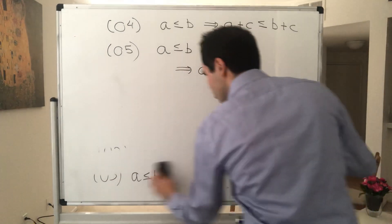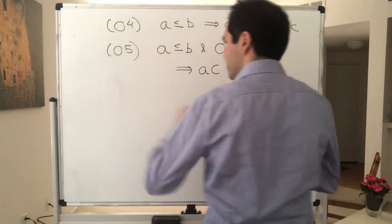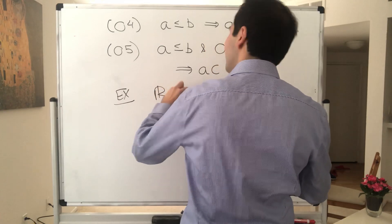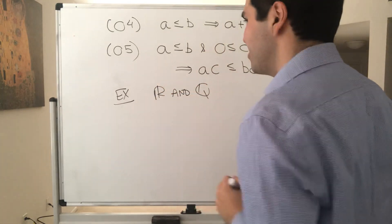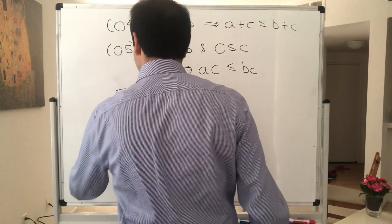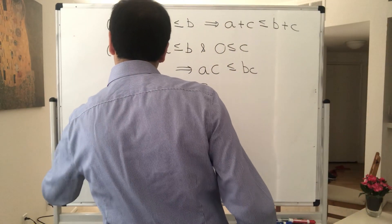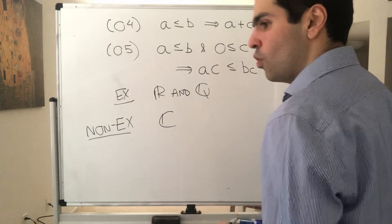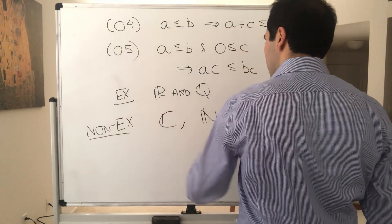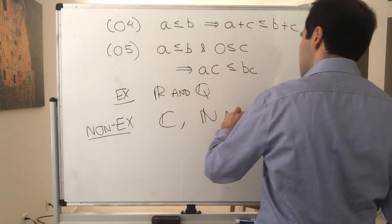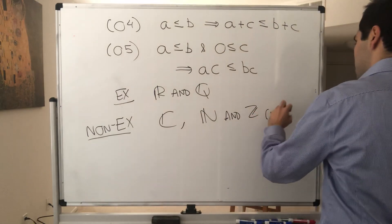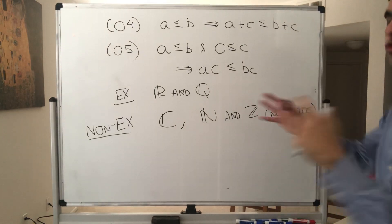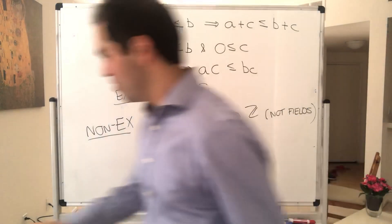Just a couple of remarks — some examples: R and Q. We still haven't told you what makes R so much better than Q. Some non-examples are the complex numbers, because we cannot order complex numbers. Also N and Z, but that's because they're not fields. Very importantly, an ordered field has to be a field.